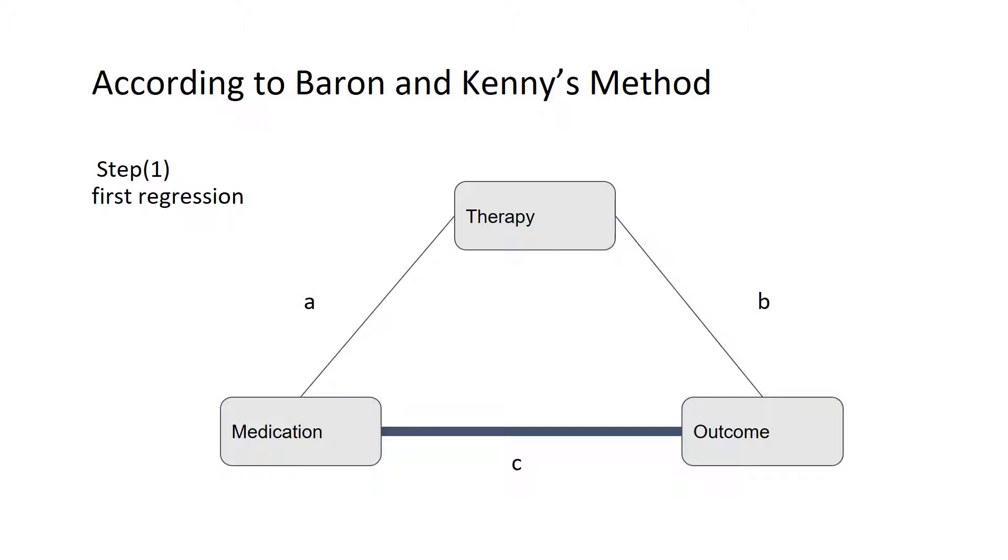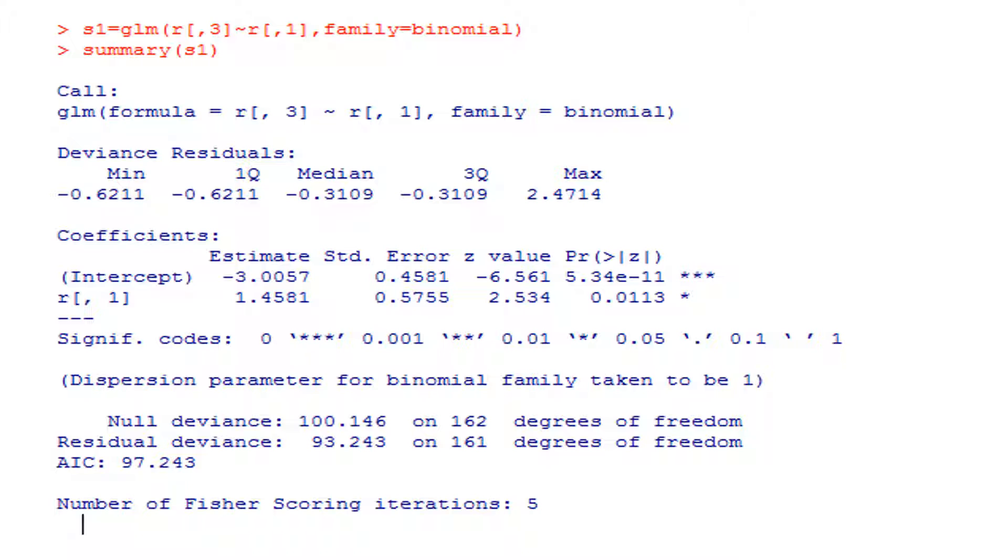Again, we are using Baron and Kenny's approach or method. This is the first step. This is R software, the statistical software R, and we use the command to regress the first step, which is outcome on exposure. As we can see, it has p-value 0.0113, so it is statistically significant. There is a relationship between outcome and exposure.